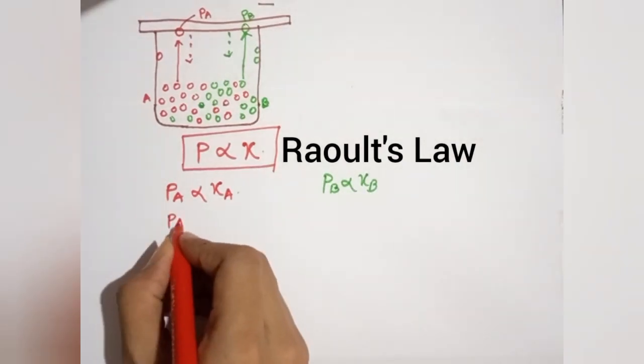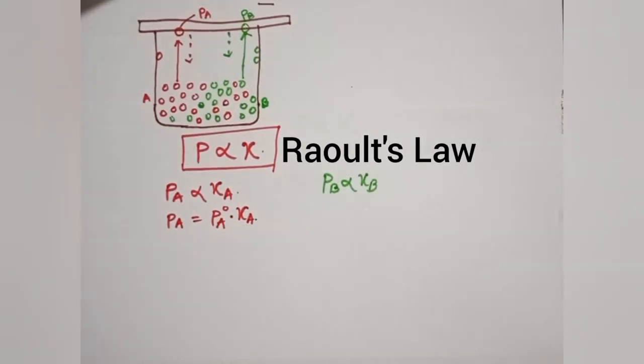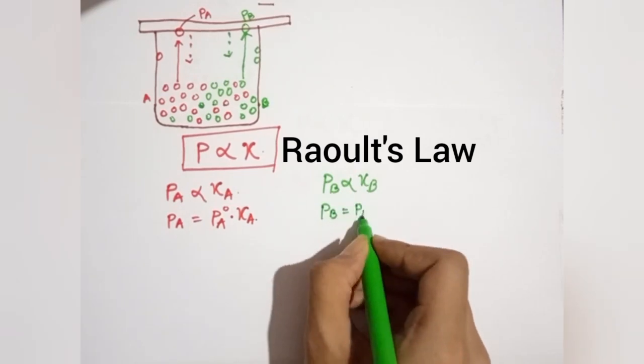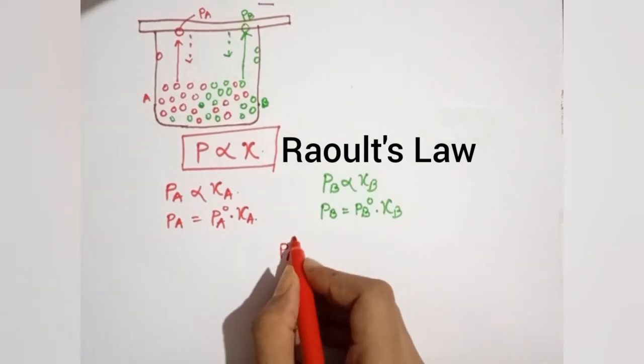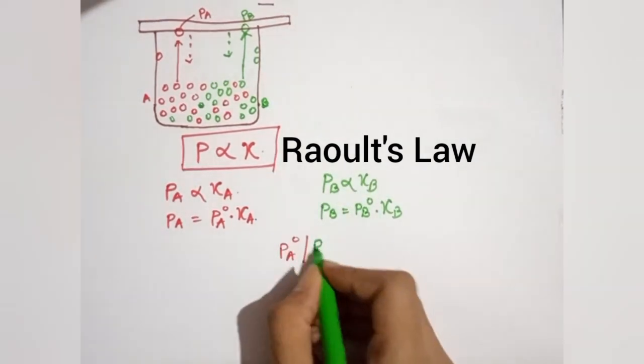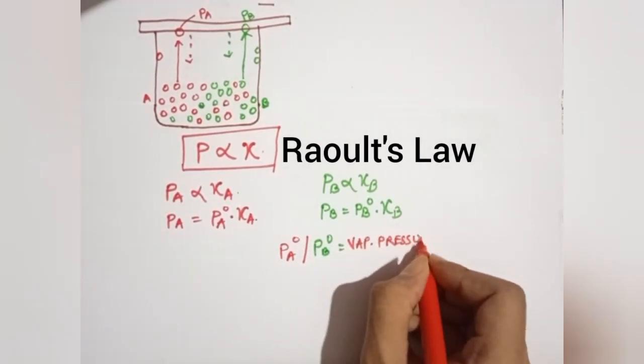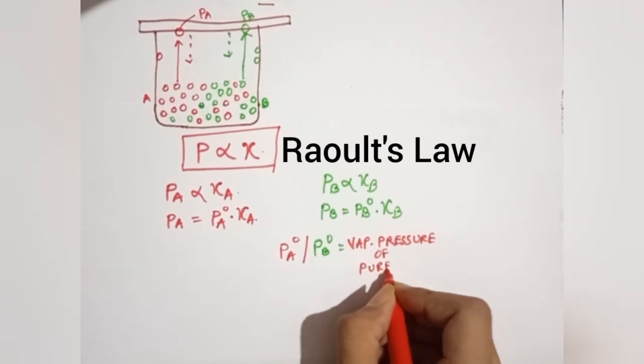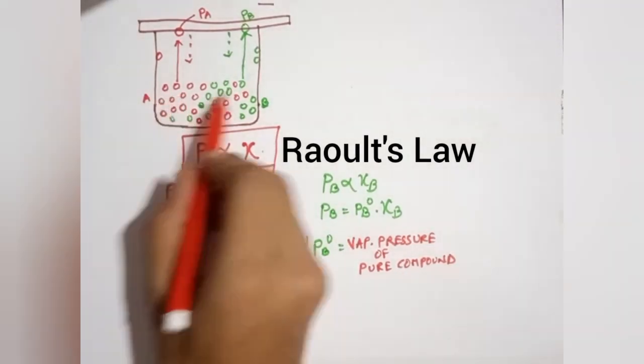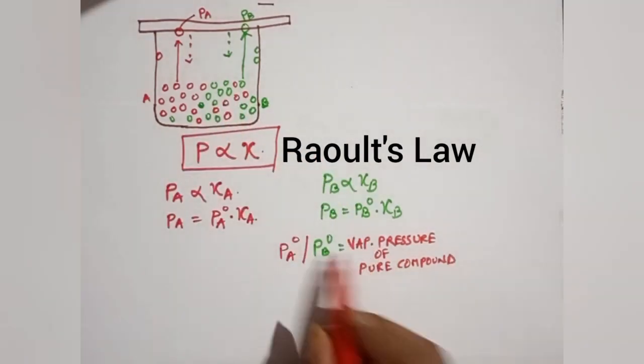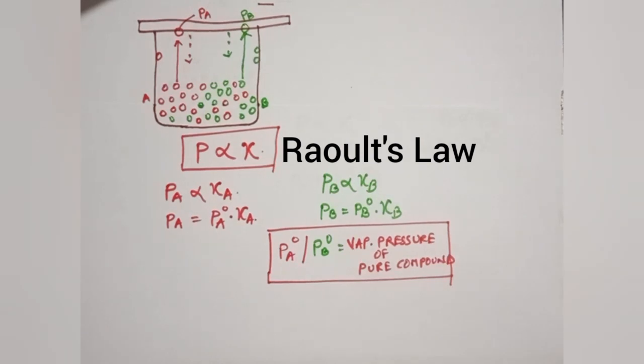To remove the proportionality constant, PA equals P°A multiplied by the mole fraction XA. Similarly, PB equals P°B multiplied by XB. This proportionality constant P°A or P°B is nothing but the vapor pressure of the pure component. That means if liquid A is present alone without any other liquid, that vapor pressure will be called PA°. Similarly, if only B liquid is present, its vapor pressure will be called PB°.